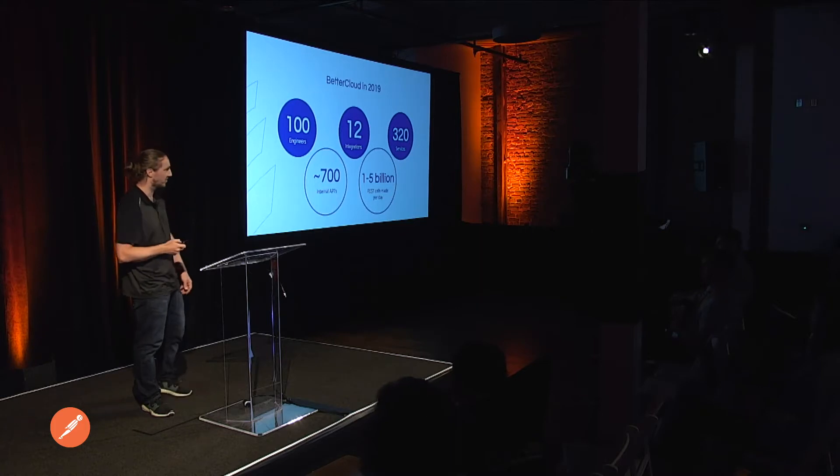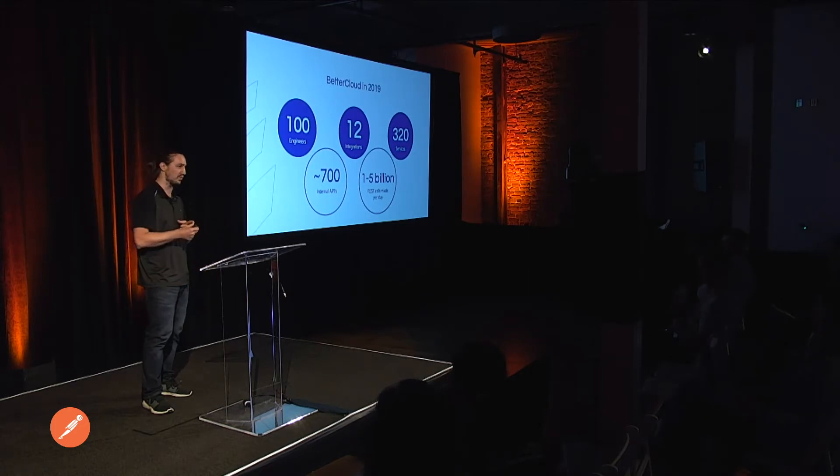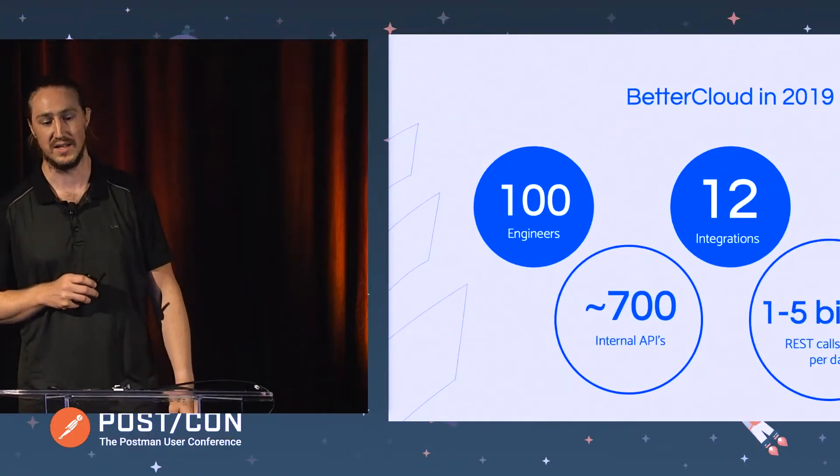We do this across 12 full integrations and probably about 20 other light or partial integrations. Google is one of them — and if you've ever integrated with their APIs, you know there's a directory admin API, a Gmail API, a groups API, a reporting API, a drive API. We actually integrate with seven APIs at Google just for one of those 12 integrations.